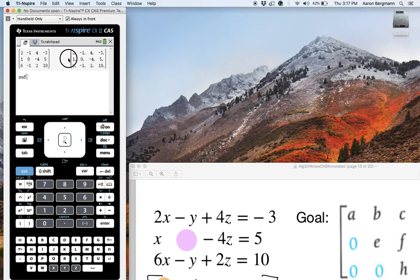Oh, is it not going to work? Paste. Well, here we go. Type it in again. 2, negative 1, 4, 3, 1, tab, 0, tab, negative 4, tab, 5, tab, 6, tab, negative 1, tab, 2, tab, 10. And hit enter.